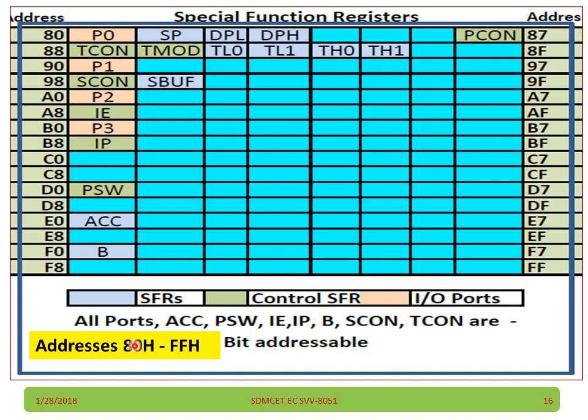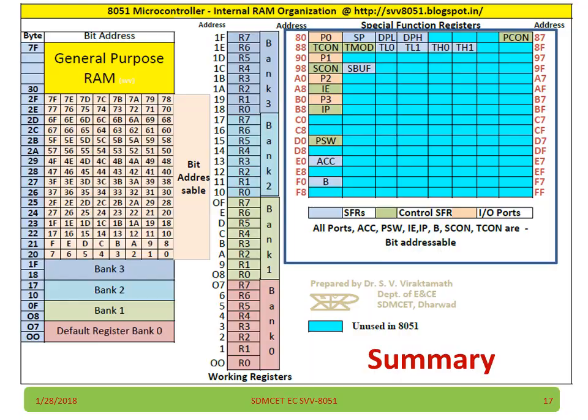The special function registers have addresses from 80H to FFH. You cannot store your general data anywhere in this area. This is the overall summary — you can take a print out, rewind, listen again, or visit the blog for more information.